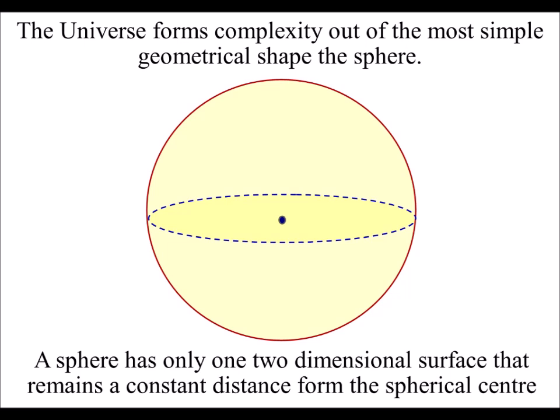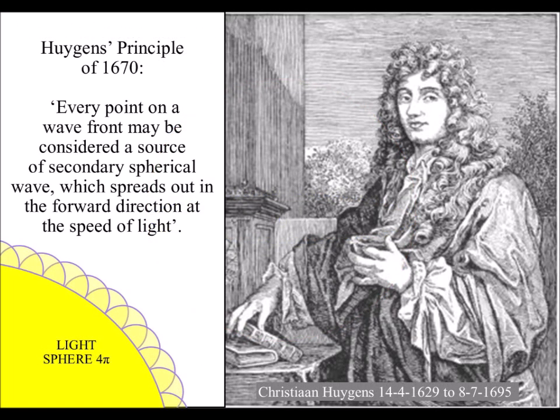All we need is spherical geometry to arise naturally in the universe, and we have this in Huygens' Principle of 1670 that says, every point on a wavefront has the potential for a new spherical wave.